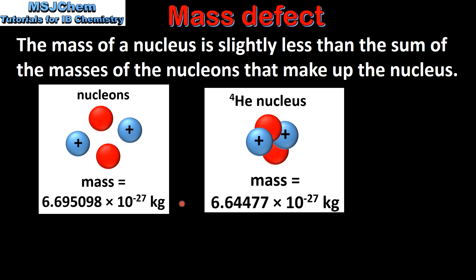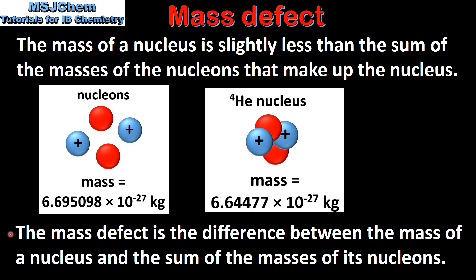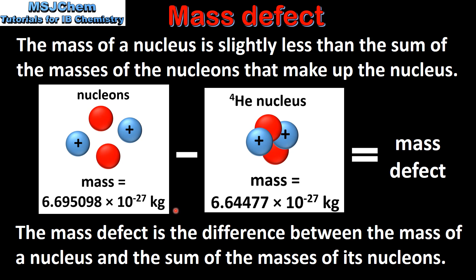This difference in mass is known as the mass defect. The mass defect is the difference between the mass of a nucleus and the sum of the masses of its nucleons. To calculate the mass defect, we subtract the mass of the nucleus from the total mass of the nucleons that make up the nucleus.